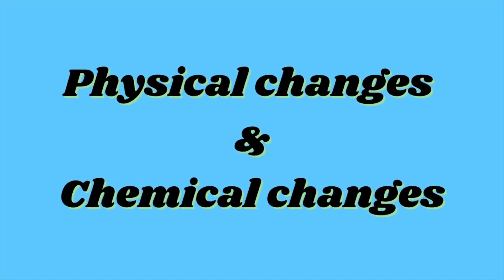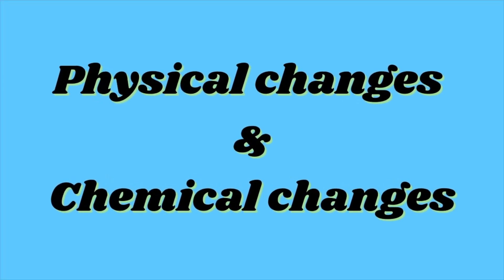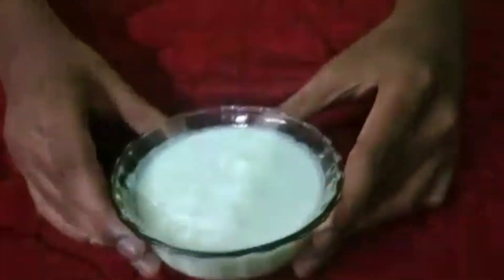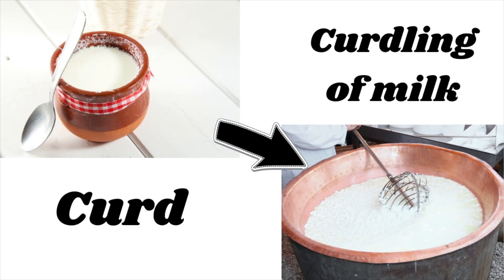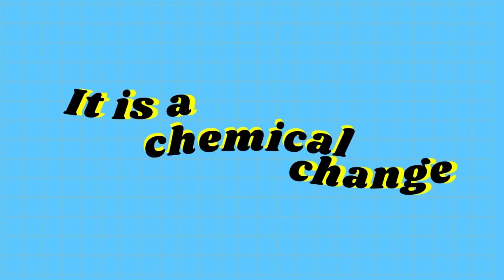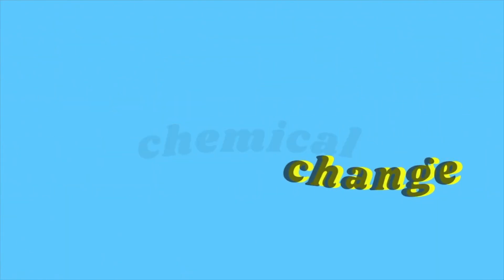In this topic we have covered many types of physical and chemical changes. I like eating curd, and this is formed due to the curdling of milk, which may happen in the presence of bacteria or by squeezing lime juice into it — and it is a chemical change. I also like eating idli, dosa, and bread.